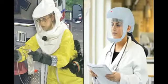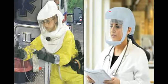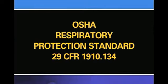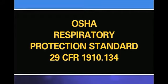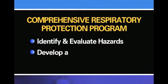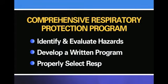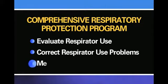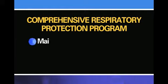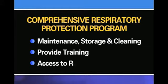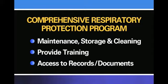When a respirator is required by your employer, your employer must develop and implement a comprehensive respiratory protection program that meets the requirements of either federal or state OSHA's respiratory protection standard. Employers must: identify and evaluate hazards; develop a written program; properly select respirators; evaluate respirator use; correct any problems; conduct medical evaluations and fit testing; provide for maintenance, storage, and cleaning of respirators; provide training; and provide access to specific records and documents such as a written copy of the respiratory protection program.